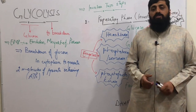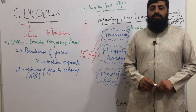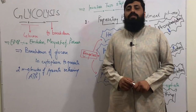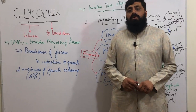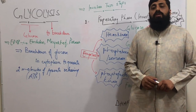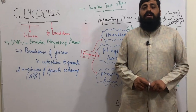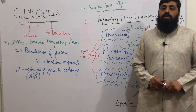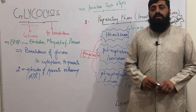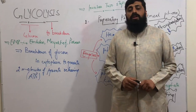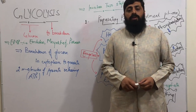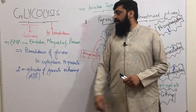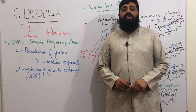This process in the cytoplasm happens in two steps. For your ease, we will divide it into two steps: number one, where we invest and prepare that particular compound — glucose — to release ATPs. This is called the investment or preparatory phase. The second phase will be the oxidative phase, which will generate ATPs in the later steps. Glycolysis is also called the EMP pathway, due to three German scientists.